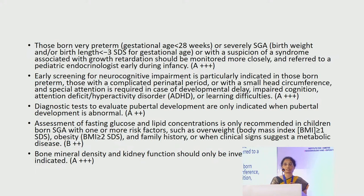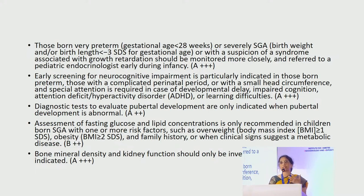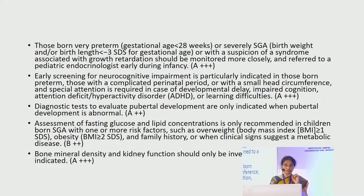Early screening for neurocognitive impairment is indicated in those born preterm, those with a complicated perinatal period, or those with a small head circumference, as ADHD and impaired cognition are more common. Routine assessment of fasting blood sugar, lipids, and insulin levels is not recommended unless the child has clinical features or strong family history, such as a mother with gestational diabetes or signs of insulin resistance like acanthosis nigricans. Bone mineral density and kidney function should also only be investigated when necessary.